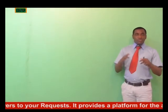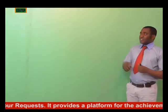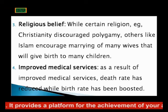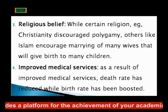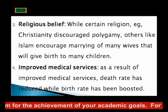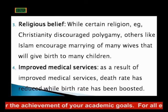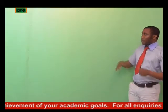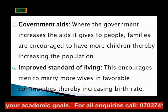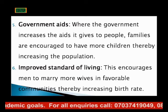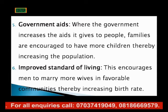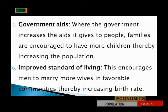Then we have improved medical service. As a result of improved medical service in a particular area, death rate is bound to be reduced because people have access to very good medical service. Then we have government aid. Where the government increases the aid it gives to people, families are encouraged to have more children, thereby increasing the population.